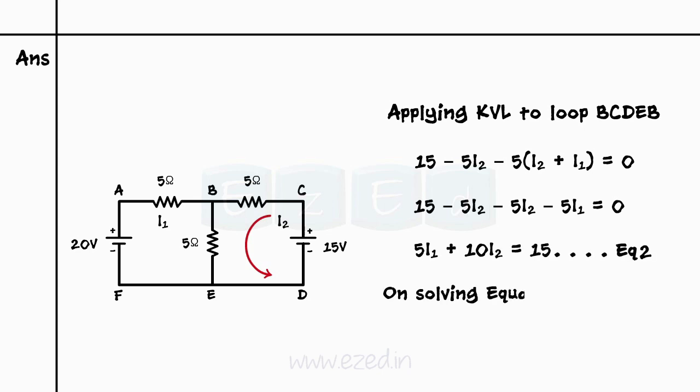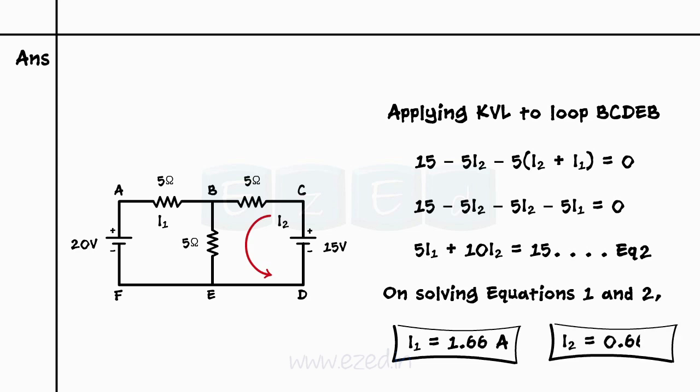On solving the two equations, we get the value of two unknowns as I1 equals 1.66 amperes and I2 equals 0.66 amperes. Now, plus sign of both currents indicate that the assumed direction for the current flow is correct.